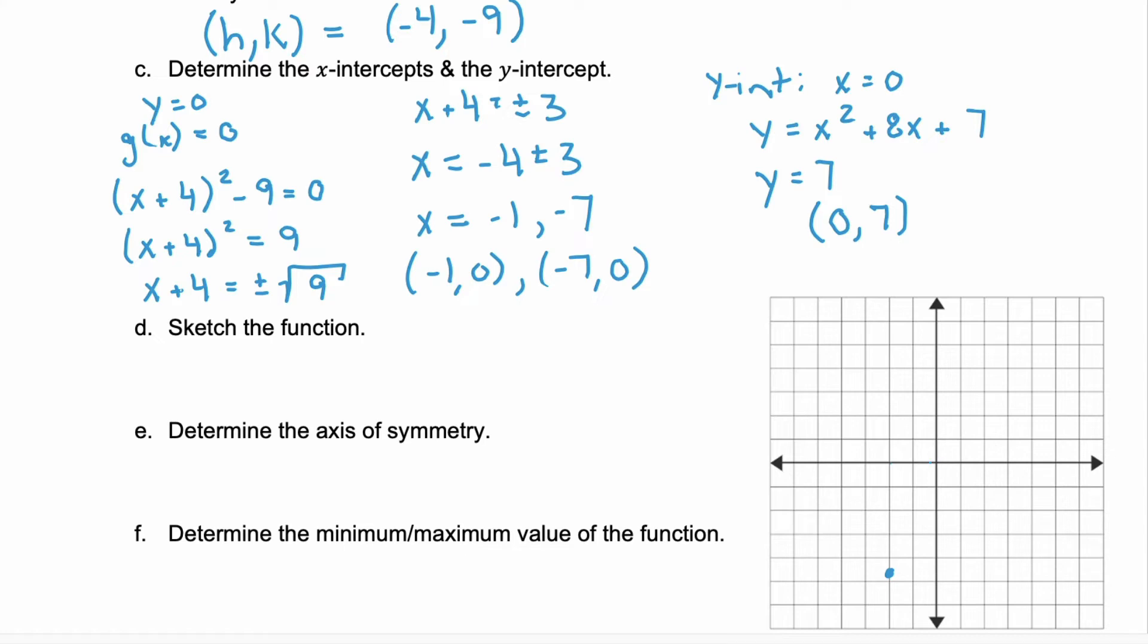We go negative 1, 0 for our first x intercept, and negative 7, 0 for our second x intercept. We can find our y intercept. That's 7, 0. And we can connect these dots to get that quadratic.